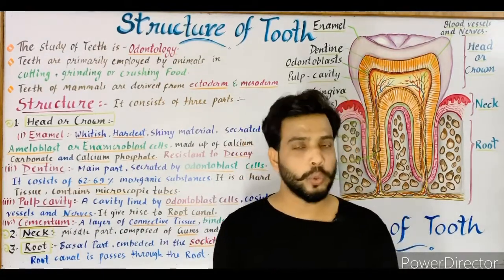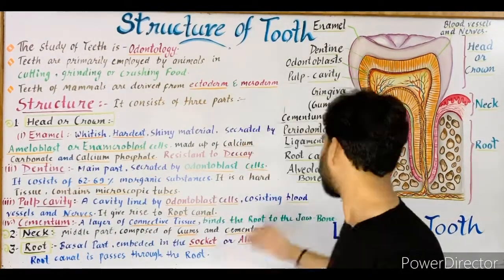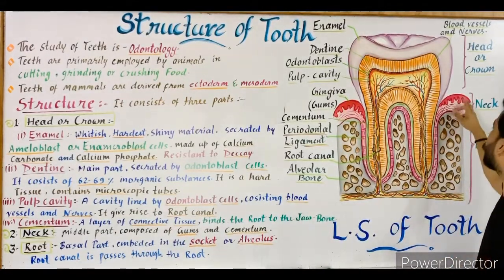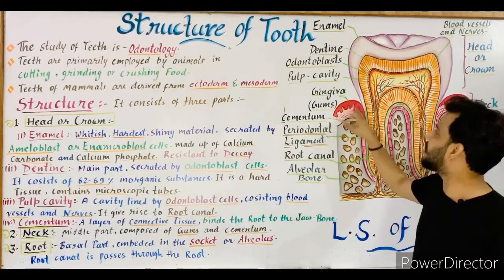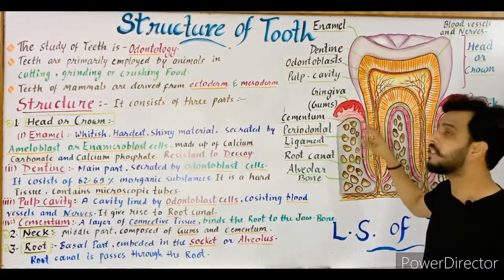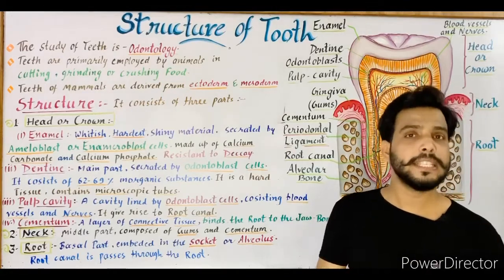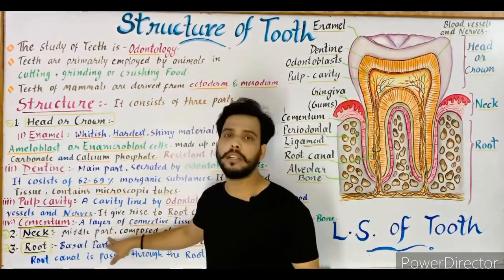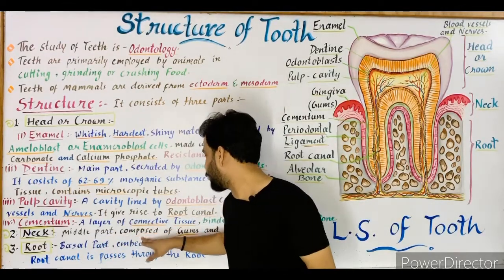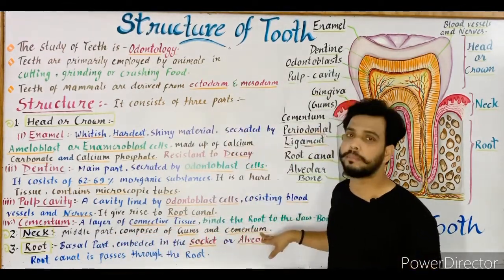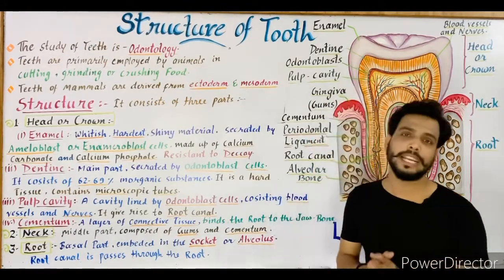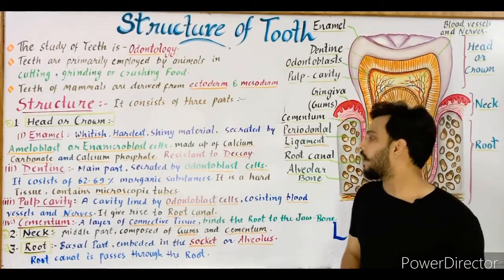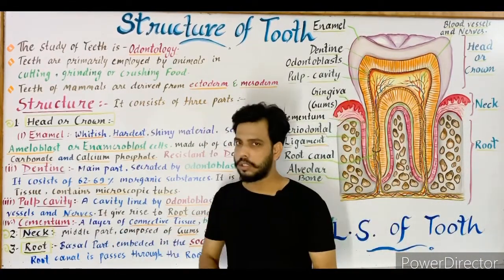The neck is the middle part of the tooth. It is composed of two important parts: gingiva (gums) and cementum. So the neck consists of gums and cementum, which together form the middle portion of the tooth.